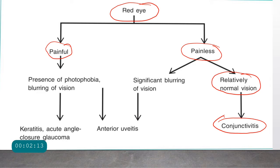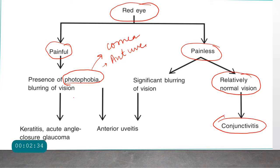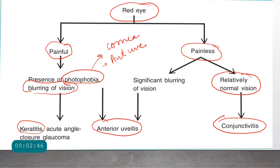If the patient has a painful eye with redness and photophobia, two structures can be involved: the cornea and the anterior uvea. With photophobia and blurring of vision, the cornea is likely involved — suggesting keratitis — or the anterior uvea is involved, suggesting anterior uveitis.